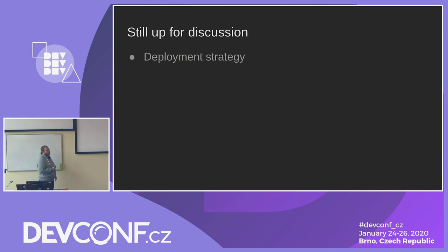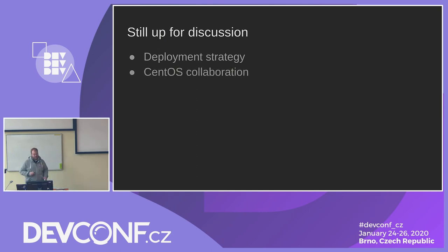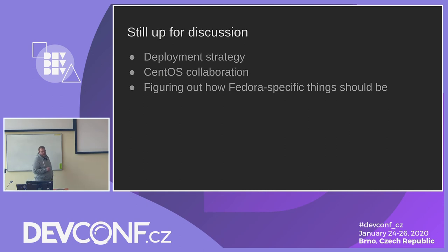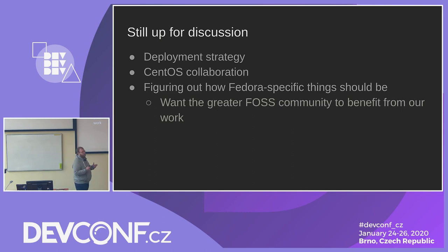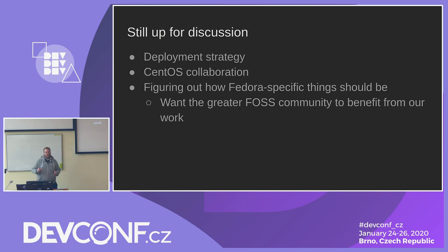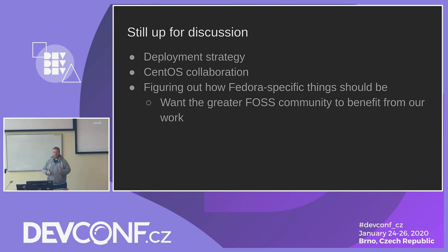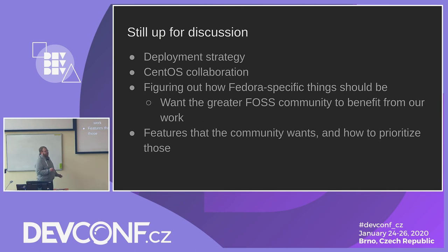There are things still up for discussion: deployment strategy — how and when we deploy initially and going forward as we make changes; CentOS collaboration, still up in the air; figuring out how Fedora-specific things should be abstracted so the greater open source community can set up a similar system, since Fedora is not the only project with these problems; and figuring out what features the community wants that we haven't thought of and how to prioritize and implement them.